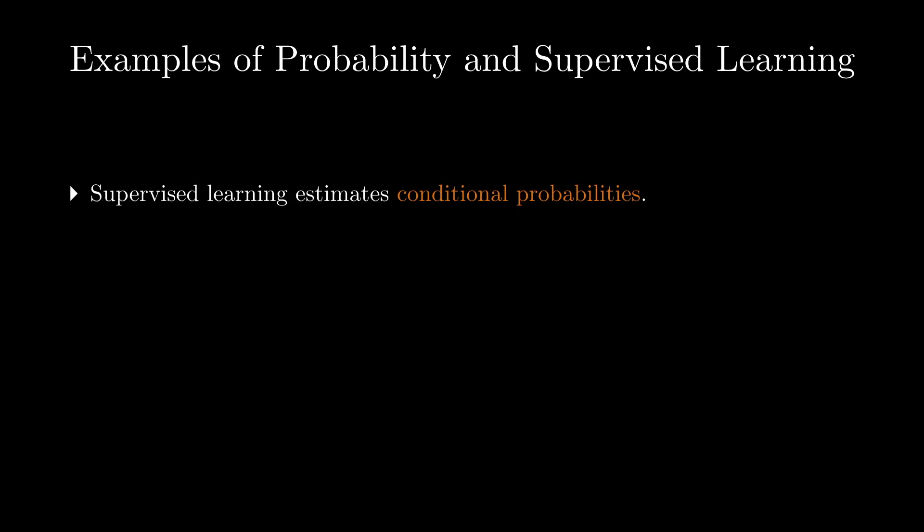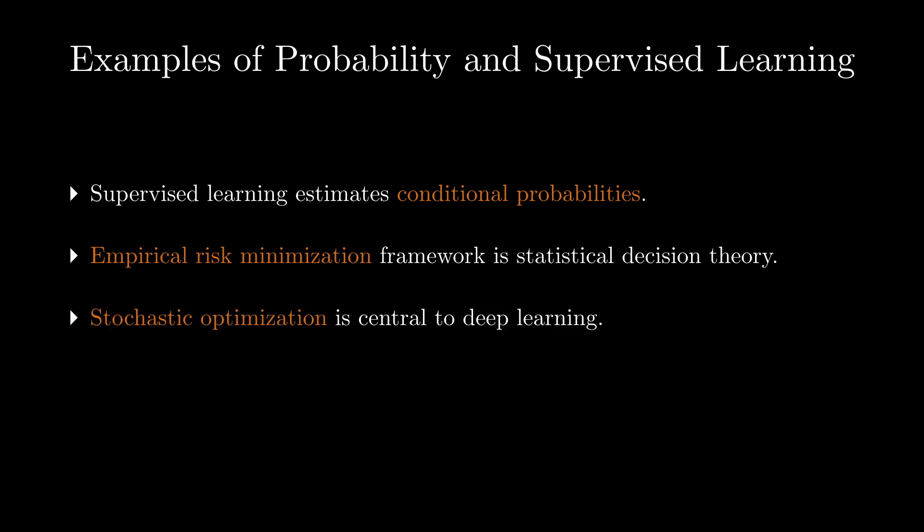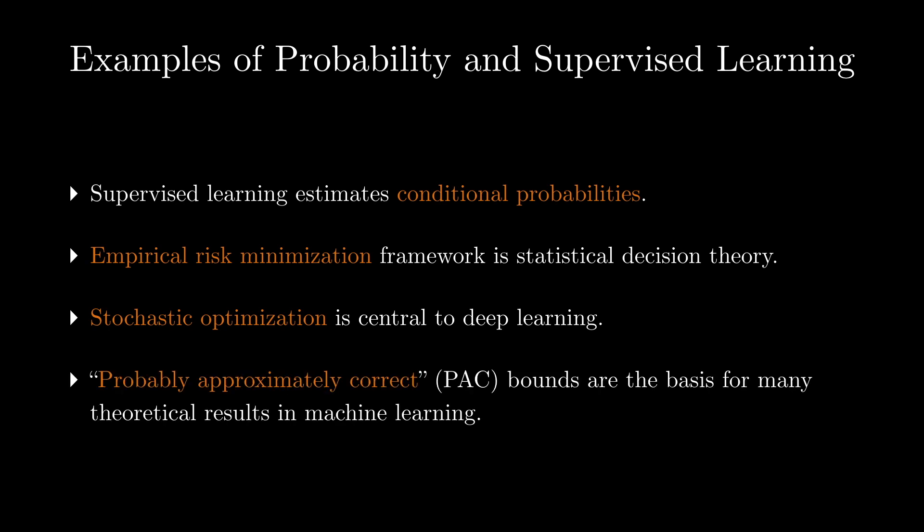That's just a few of the ways that probability informs supervised learning, but there's plenty more. For example, a large amount of machine learning is really maximum likelihood estimation of a conditional probability. On the more theoretical side, a lot of the guarantees that we achieve in machine learning arise from the framework of empirical risk minimization. As yet another example, you've been hearing a lot about deep learning. Well, deep learning depends significantly on stochastic optimization for it to work. Finally, a lot of the most famous theoretical results are based on the idea of PAC bounds, where PAC stands for probably approximately correct.